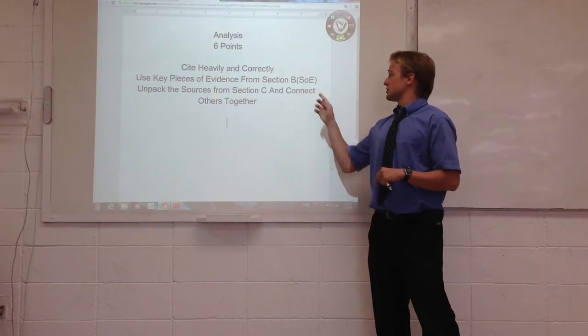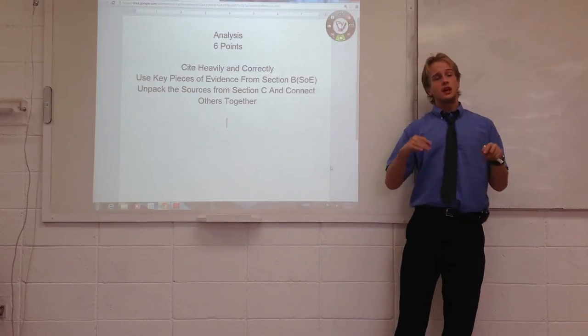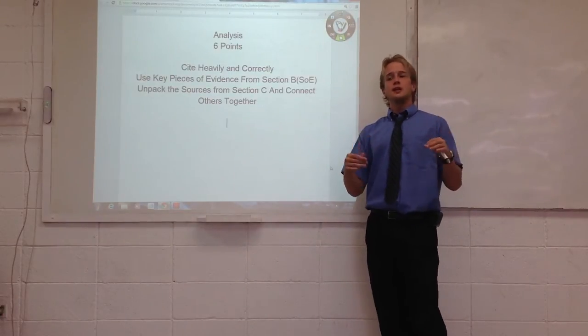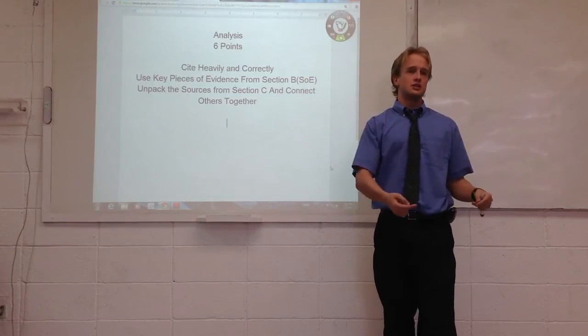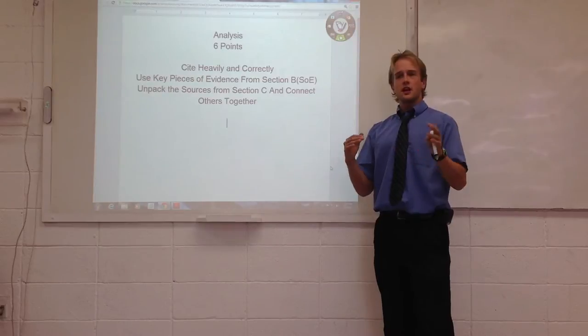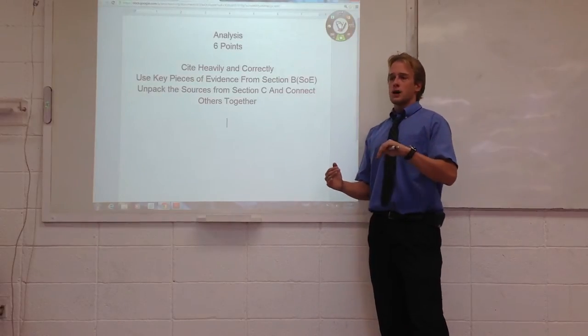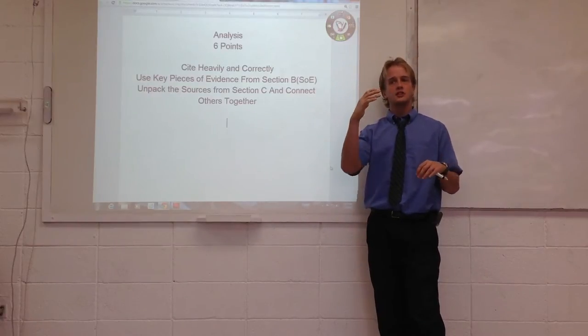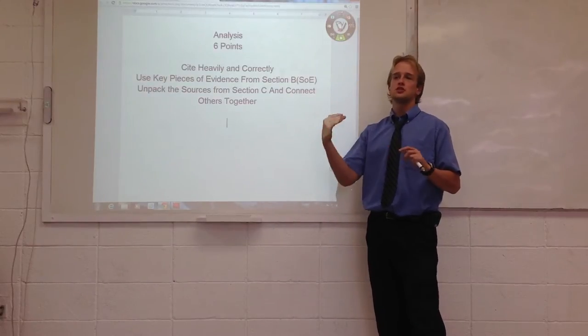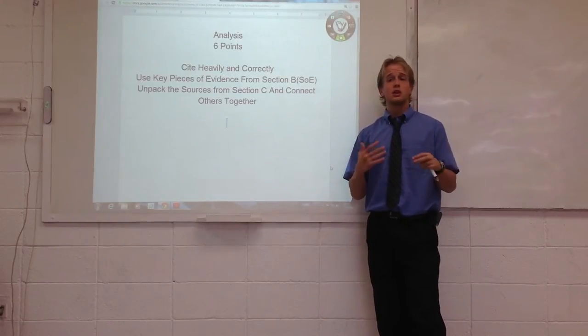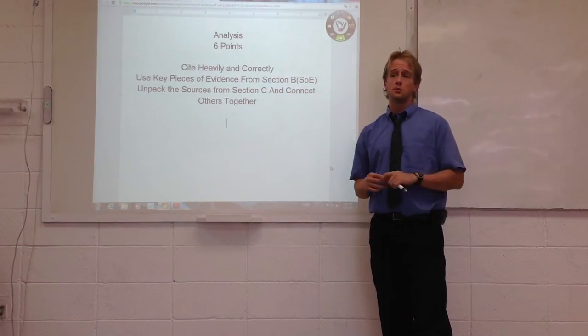Next, use key pieces of evidence from section B, the summary of evidence. So what that means is that the evidence that you should be engaging, the evidence that you should be talking about, is evidence that was already mentioned in section B. But what's happening in section D is that arguments are going to be postulated or put forward by yourself, the author, and you will contrast and compare the opinions of different historians in order to get at the answer, really, in order to lead up to the conclusion, which will be the next section.